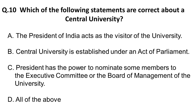The next question: which of the following statements are correct about a central university? The President of India acts as a visitor of the university — this is correct. The central university is established under an Act of Parliament — also correct. The President has the power to nominate some members of the executive committee or board of management of the university — also correct. So the correct answer for this question is all of the above.